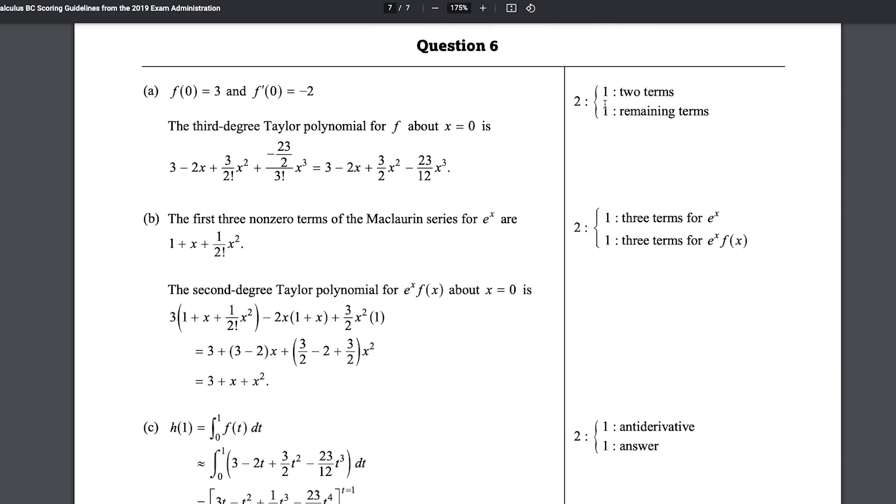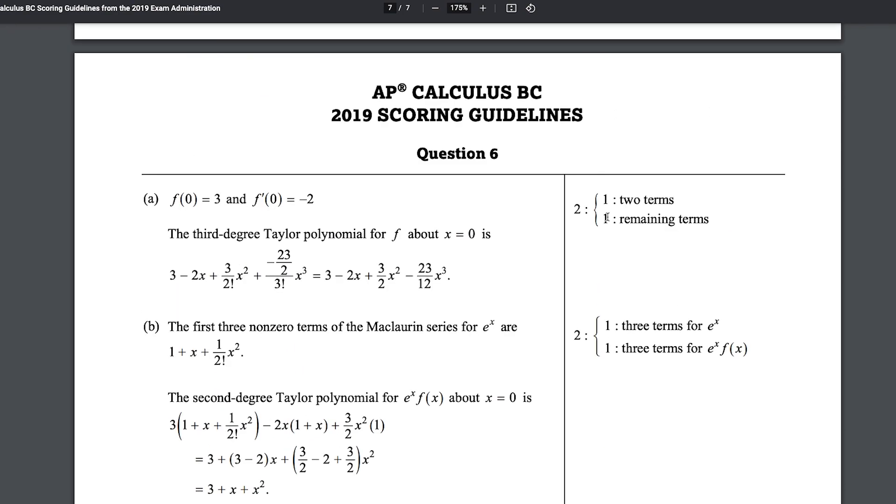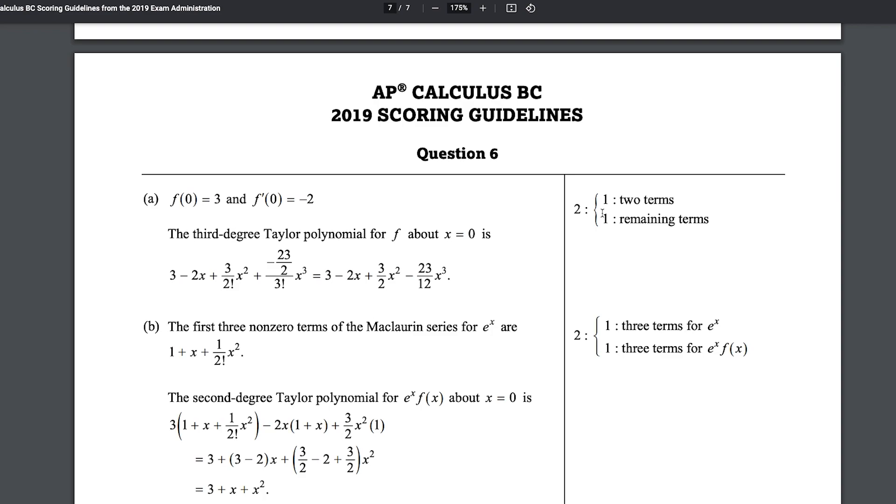One thing you should do right after is go to the scoring guidelines and see how many points is part A worth, B, C, in this case, part D. And think about what exactly do you need to have in your solution in order to get all of those points.